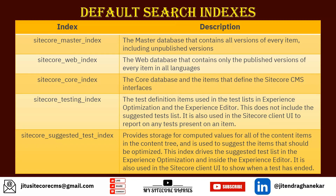The Sitecore suggested test index provides storage for computed values of all items in the content tree and is used to suggest items that should be optimized. This index drives the suggested test list in Experience Optimization inside the Experience Editor. It is also used in the Sitecore client UI to show when a test has ended — so if you are using multivariate testing in Sitecore analytics, this index shows when that test has ended.